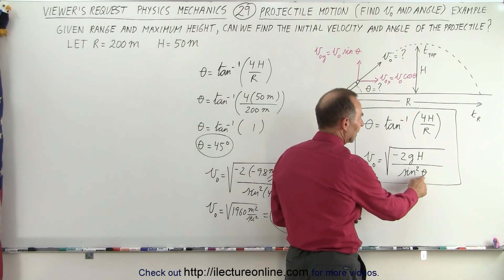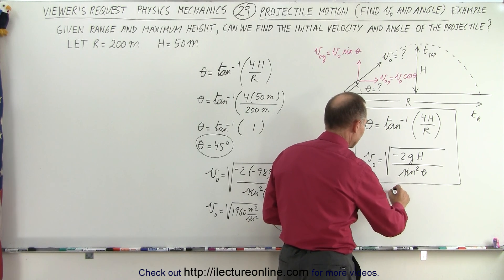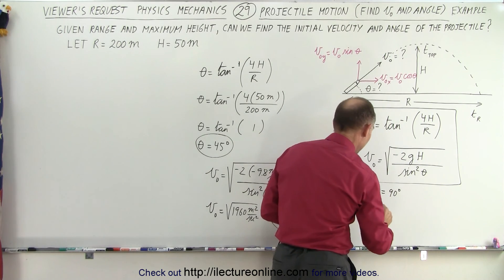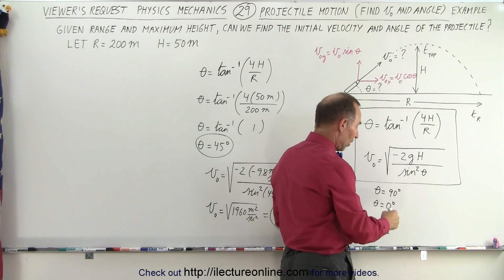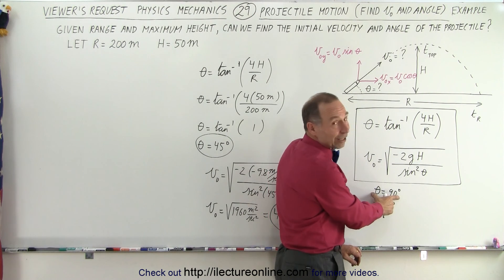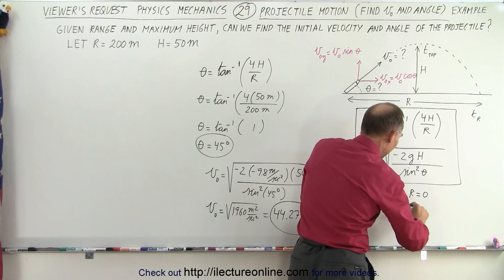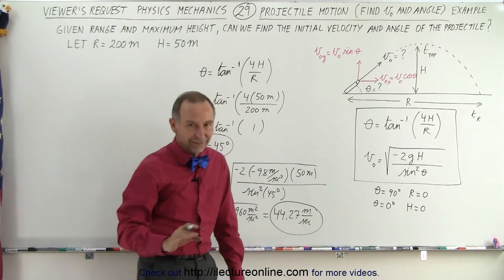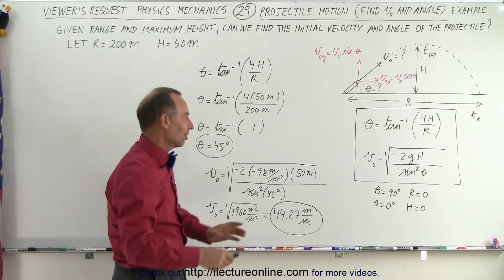Let's take the limits. The limit in one direction is theta equal to 90 degrees, so you're shooting something straight up. The other limit would be theta equal to 0 degrees, which means straight out with no angle. Obviously at 90 degrees you cannot get any range — r equals 0 — and at 0 degrees you cannot get any height — height equals 0. So those two extreme cases do not exist; you'd have to go infinitely in one direction or the other.